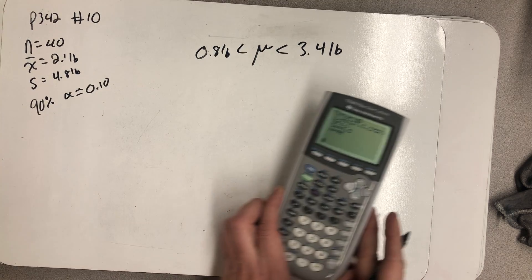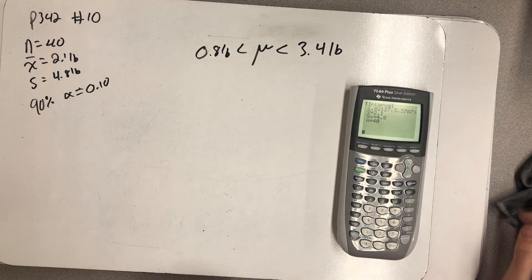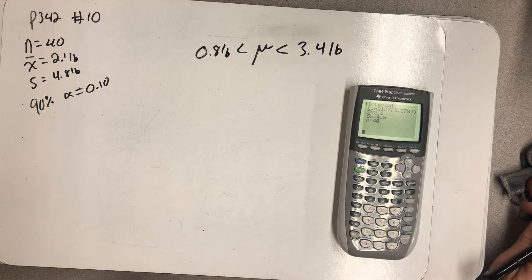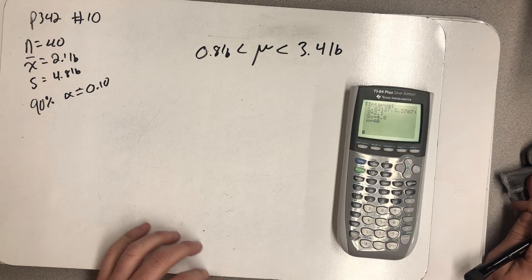The true population, and I'm 90% sure of the method we just used, that the true population mean is between 0.8 pounds and 3.4 pounds.